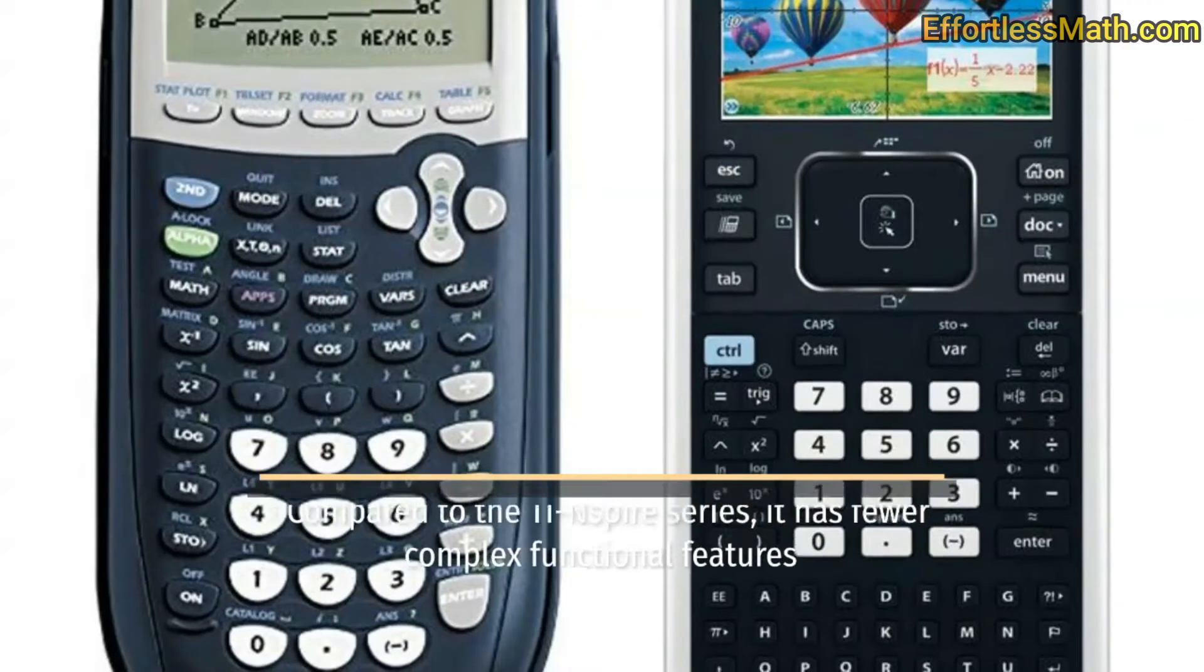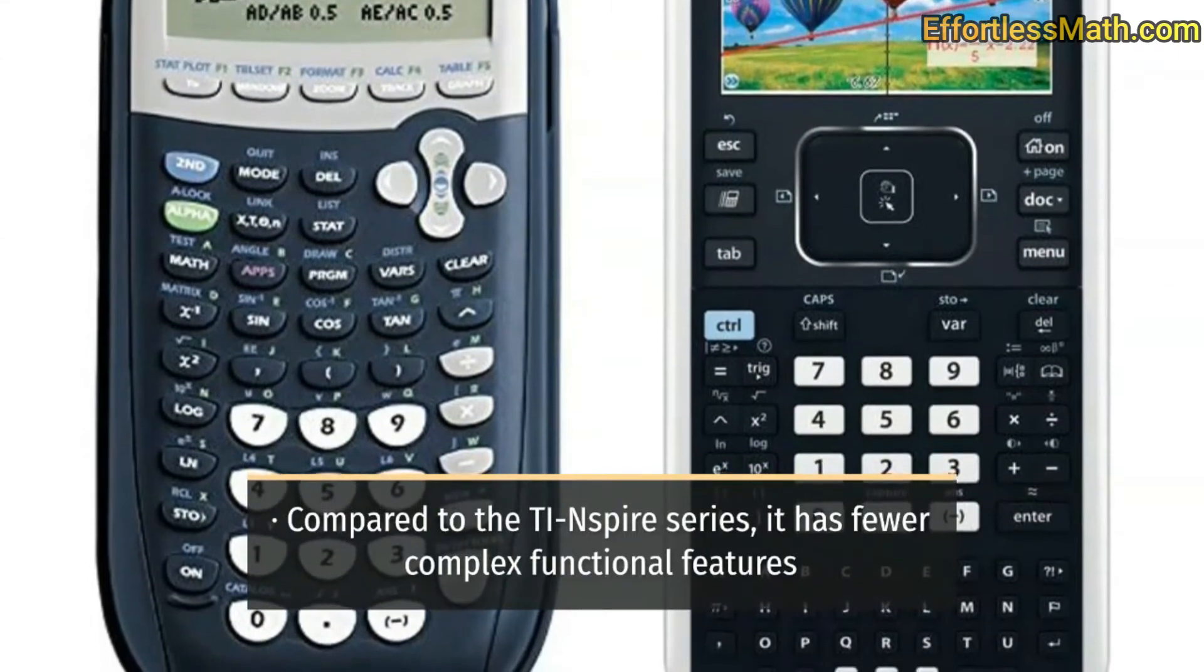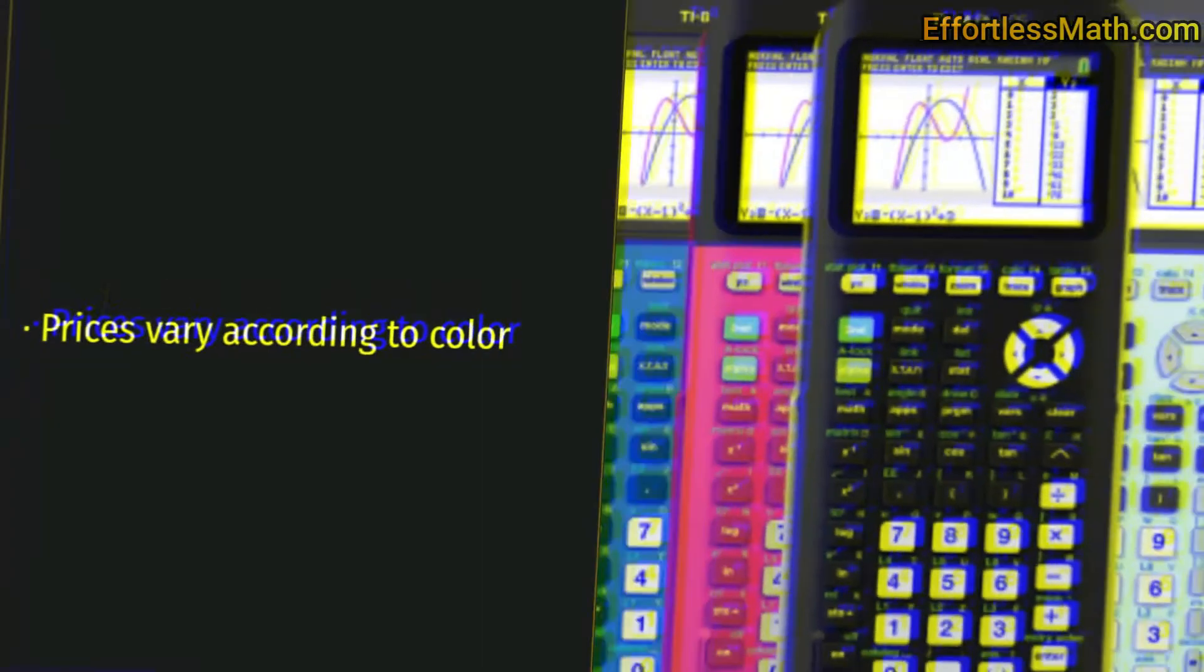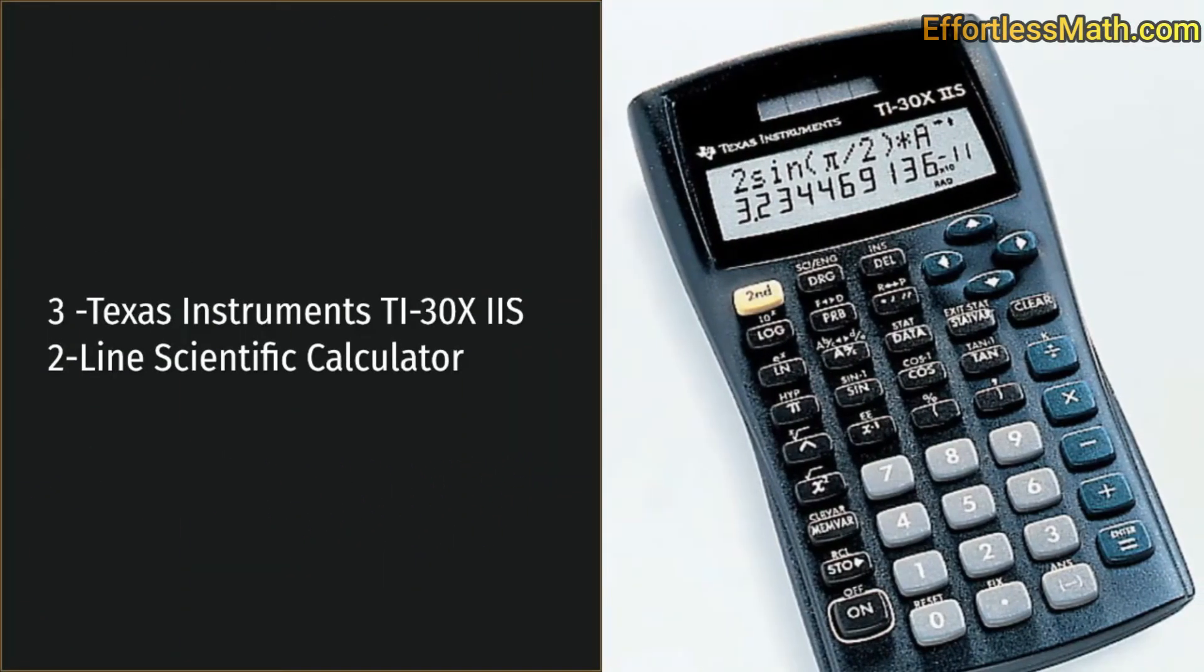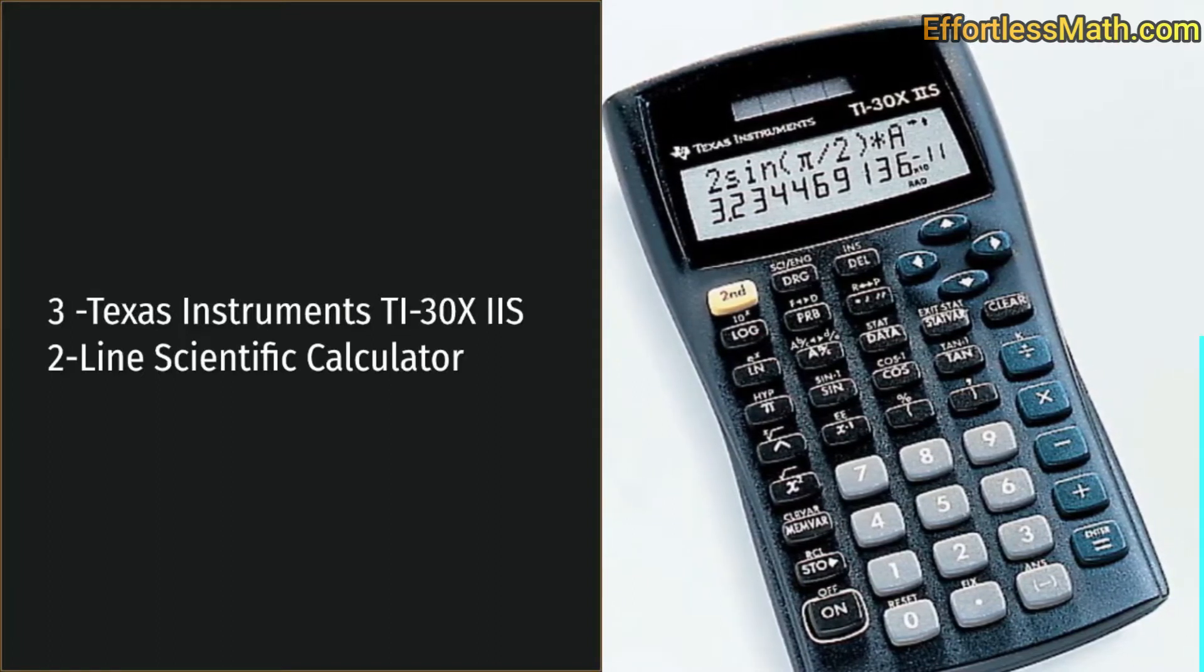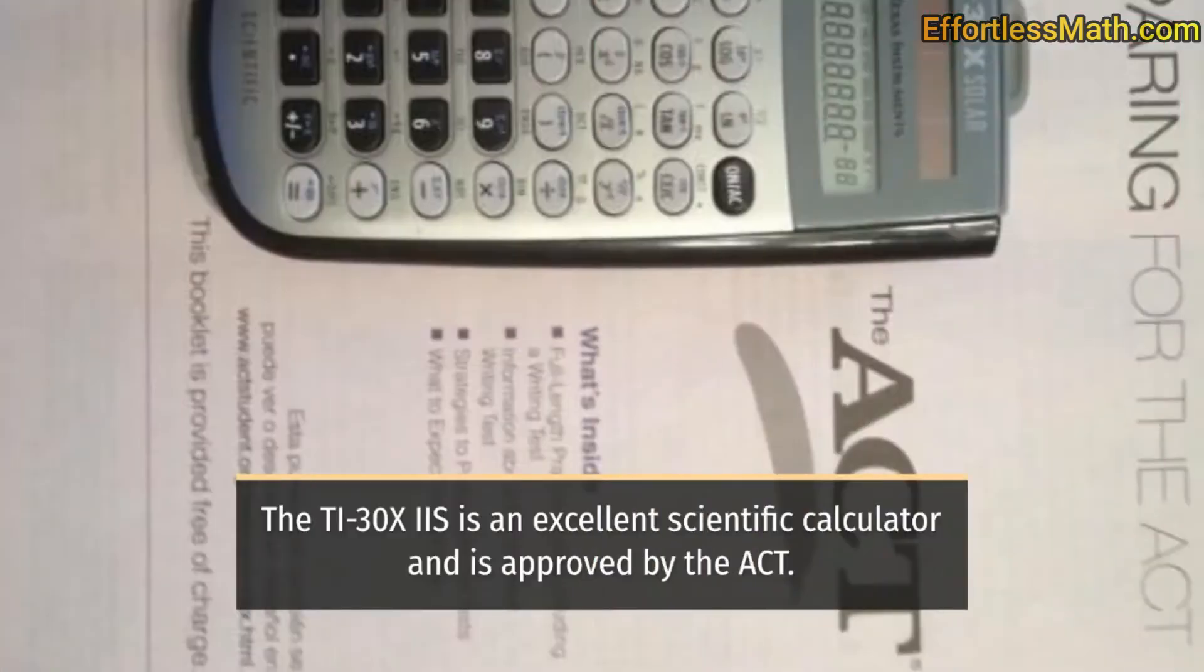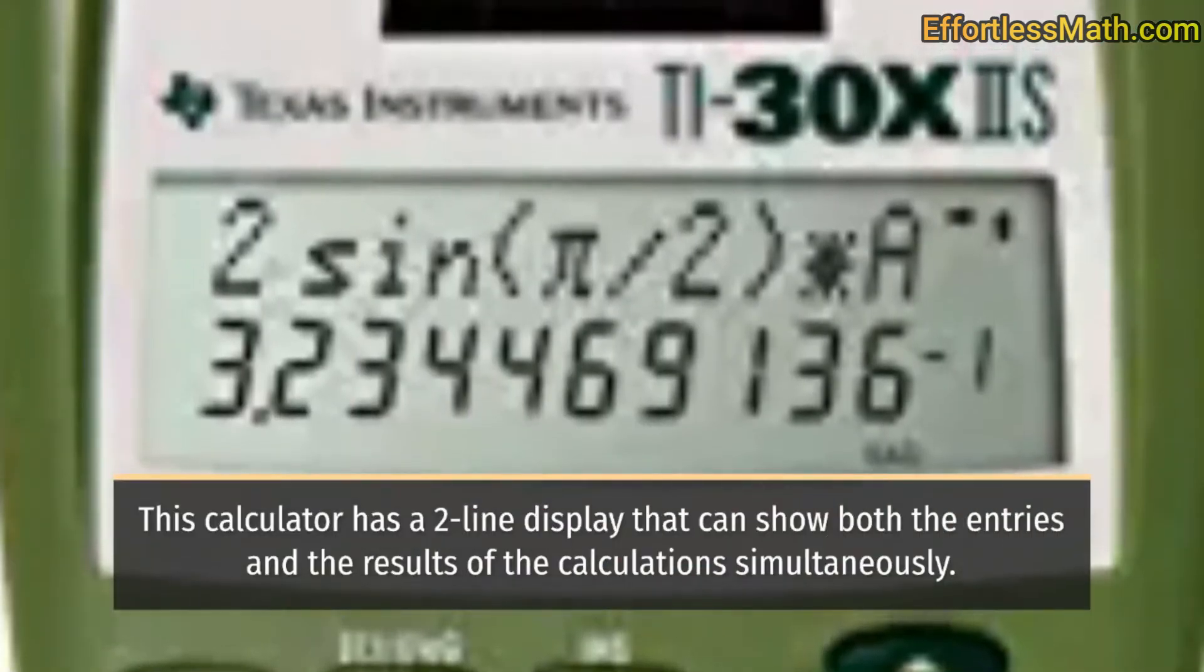Cons: compared to the TI Inspire series, it has fewer complex functional features. Prices vary according to color. Three: Texas Instruments TI-30X IIS 2-line scientific calculator. The TI-30X IIS is an excellent scientific calculator and is approved by the ACT.